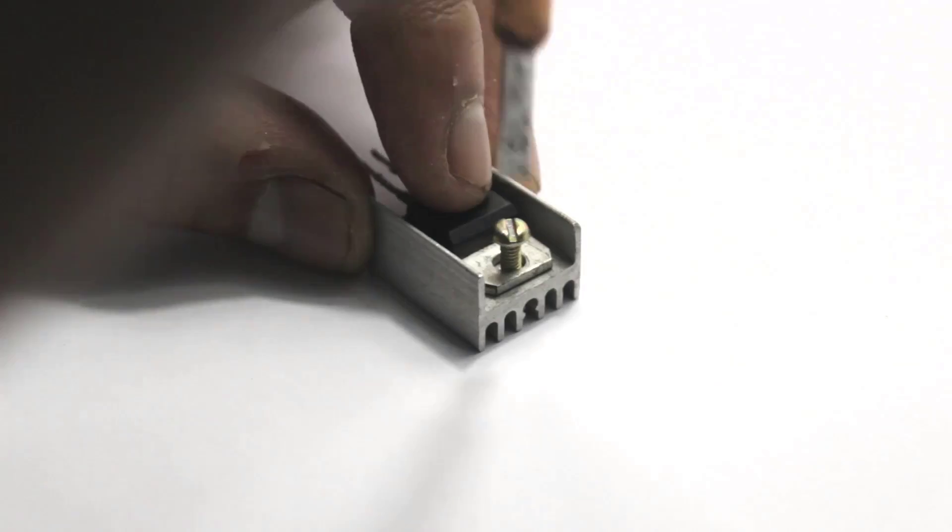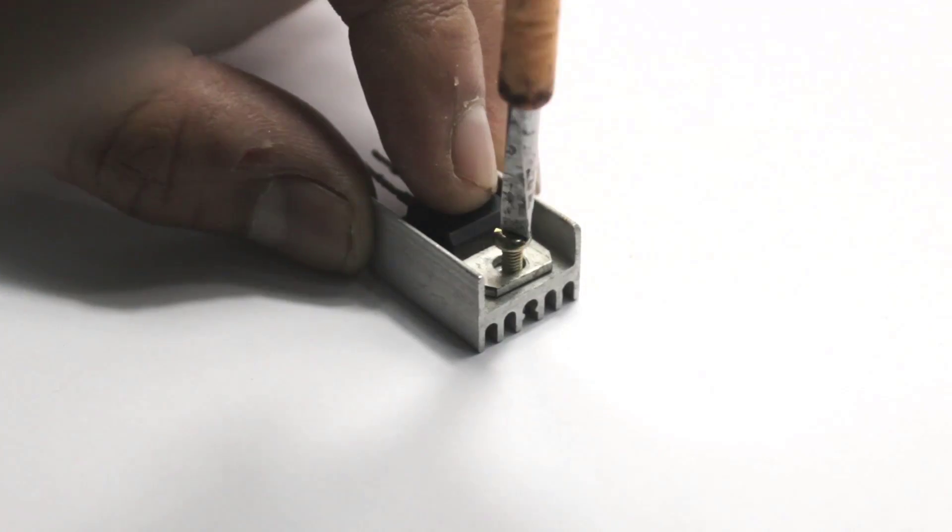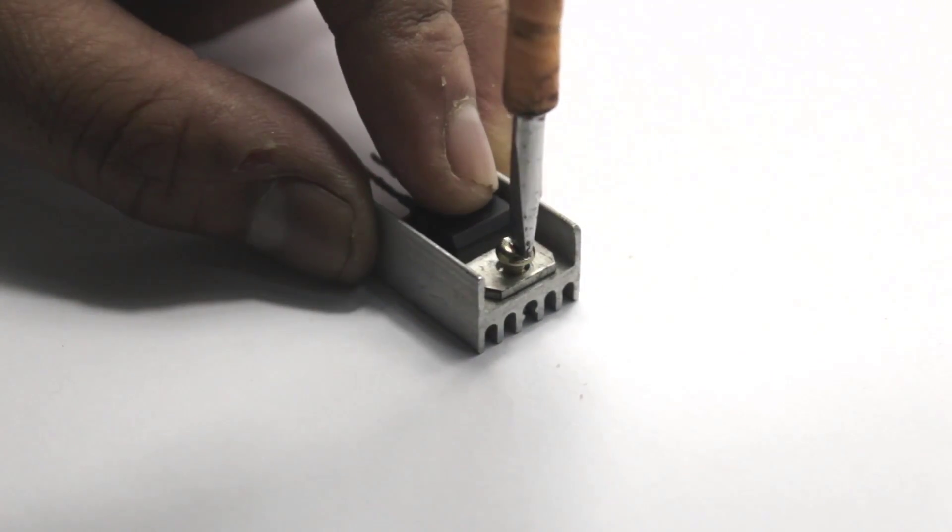As 7805 is a linear regulator, a lot of power is dissipated in the form of heat, so I have used a heatsink.